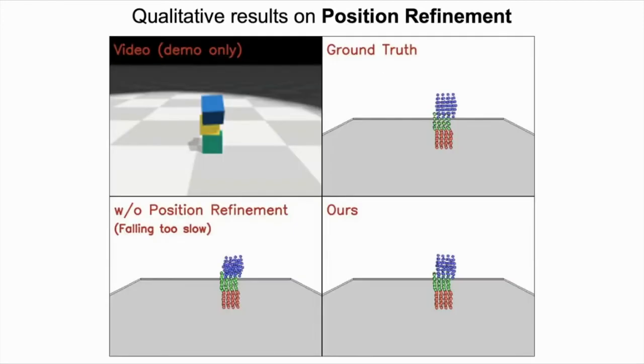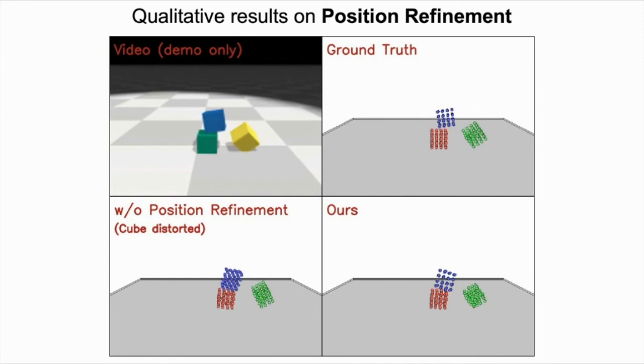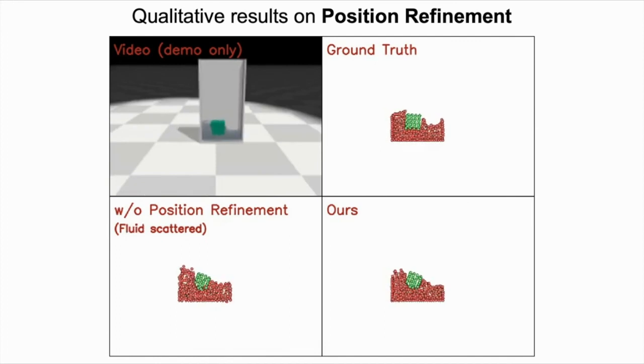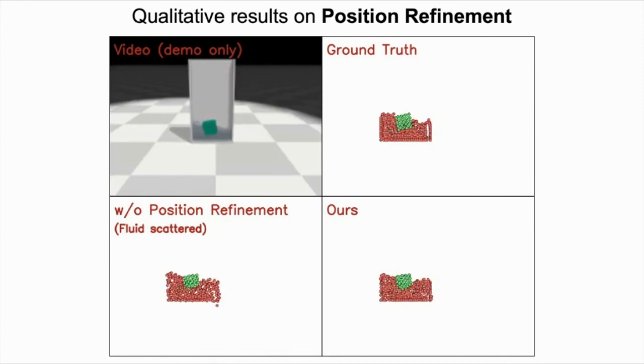The third part is the performance on position refinements. The videos show the qualitative results on predicting the future with and without the position refinements. Without position refinements, the cube is distorted, or in the rope environment, the particles scatter around. In the fluid environment, the particles are in a more irregular shape than our prediction.